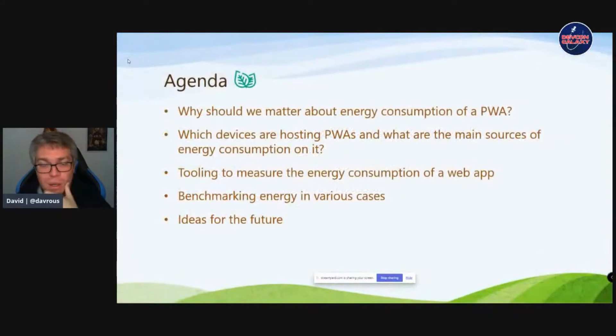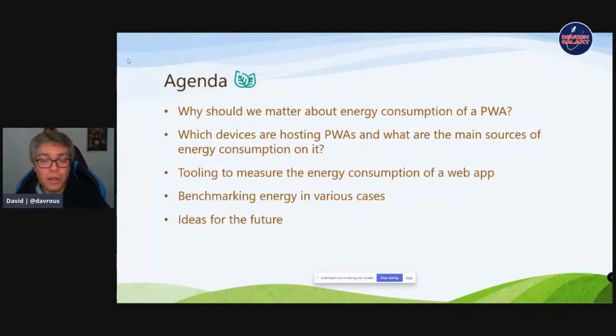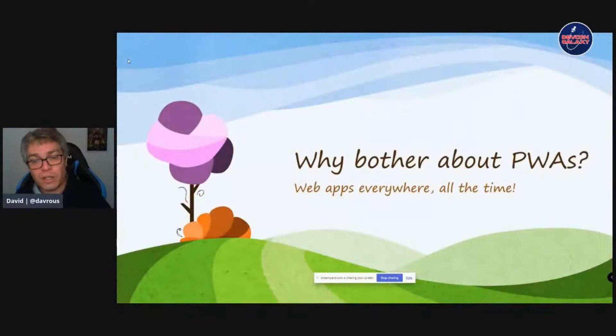The agenda: first, why should we care about building a PWA that could be more green or more efficient? Then we'll see on which kinds of devices PWAs are running — smartphones, desktop — and what impact we can have there. We'll look at tooling I found to measure the energy consumption of a web app. Then I'll share a couple of benchmarks to check if it was relevant to try to optimize PWAs. Finally, I'll share ideas for the future, since I haven't managed to check everything I wanted.